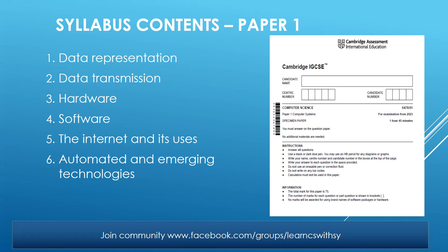First, let's talk about the syllabus contents. Students are supposed to appear in two papers — Paper 1 and Paper 2. The contents of Paper 1 that students have to study are: data representation, data transmission, hardware, software, the internet and its users, and one more topic — automated and emerging technologies.